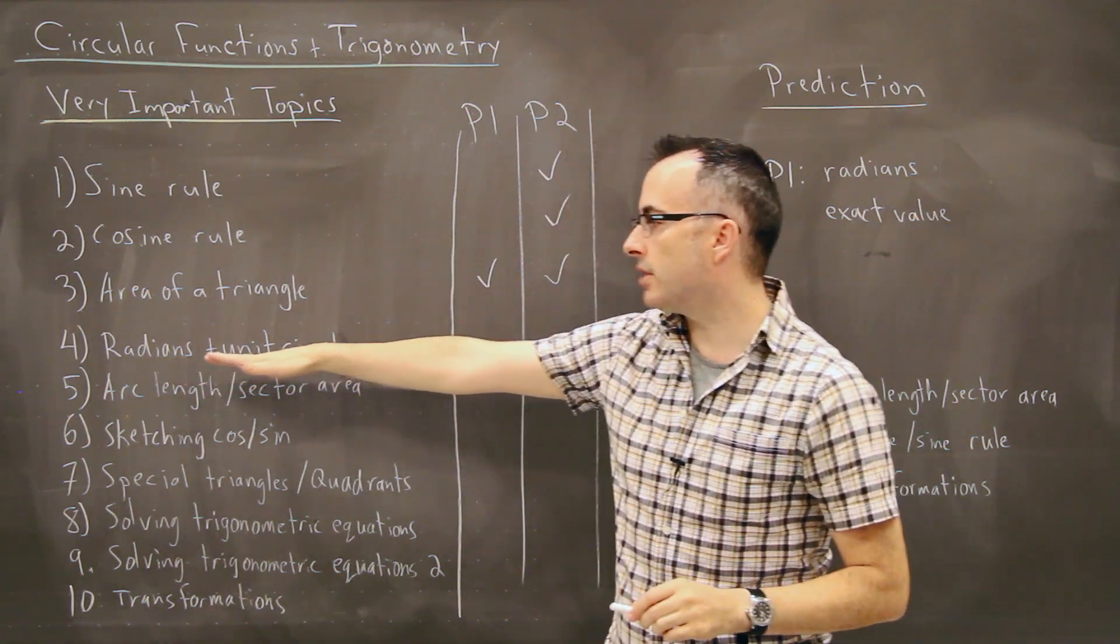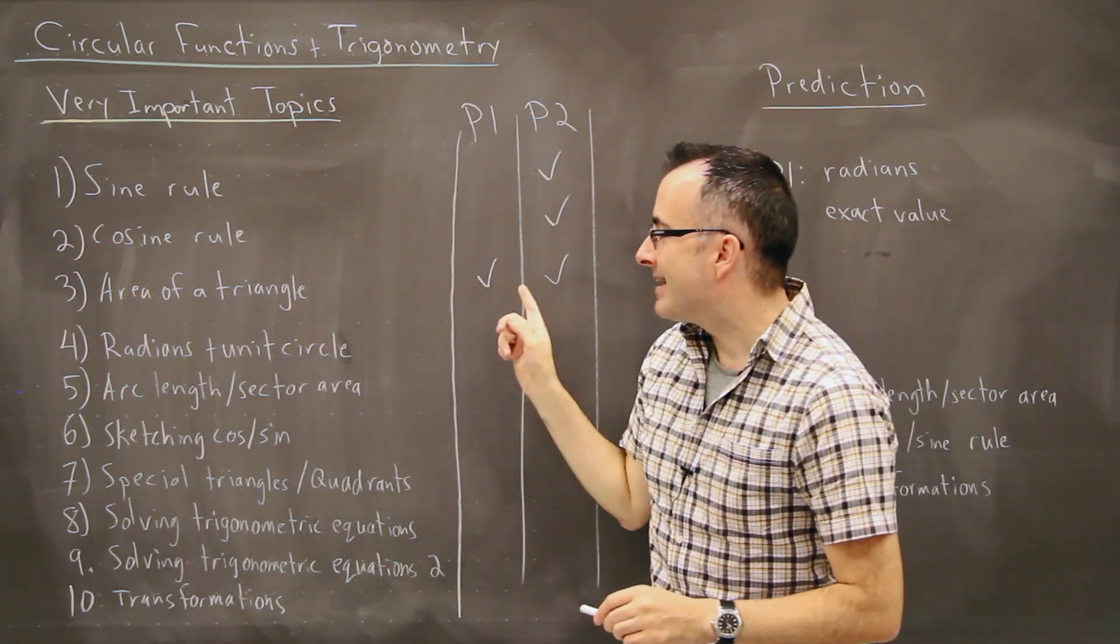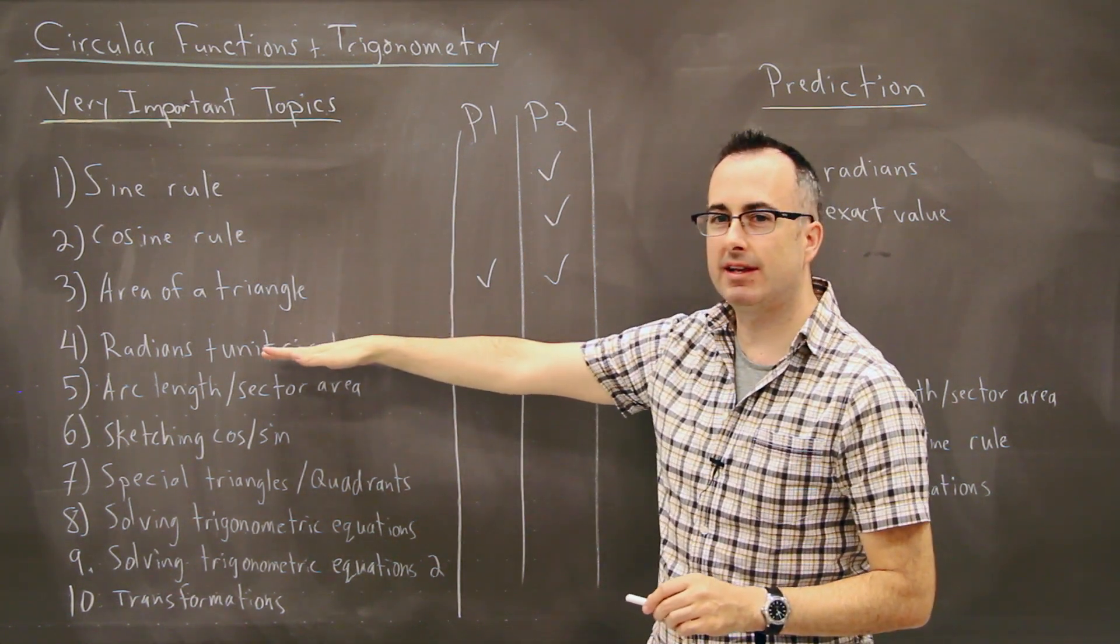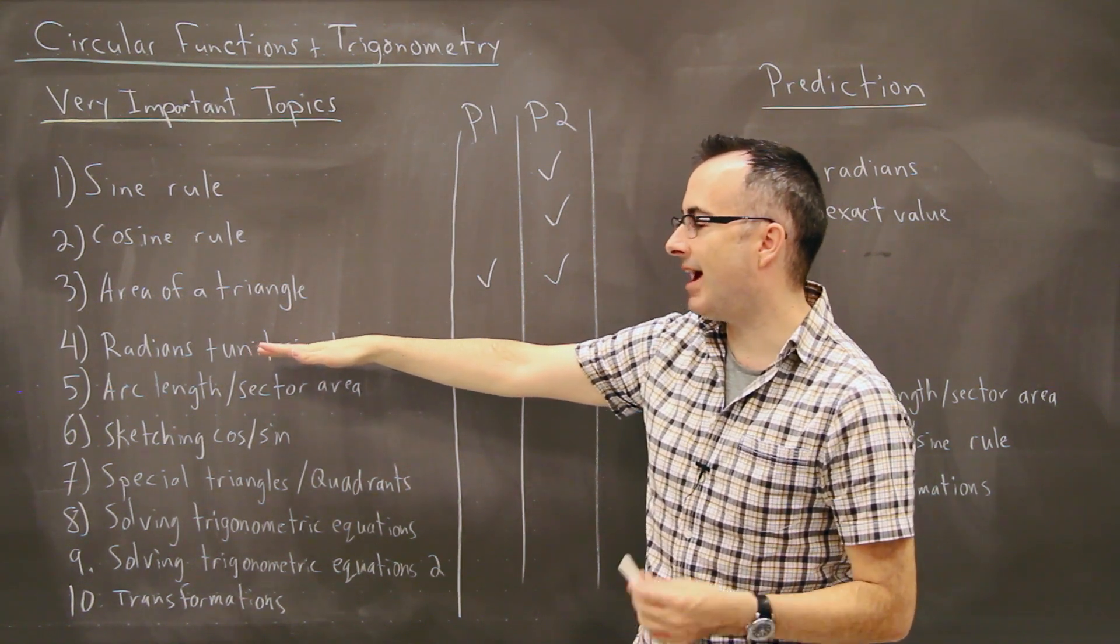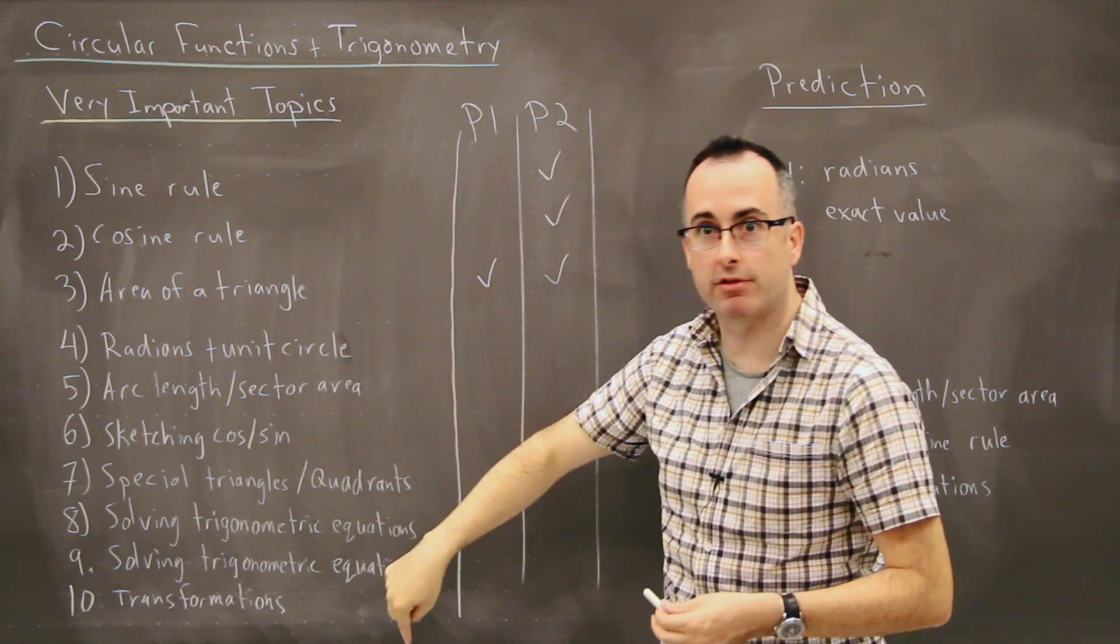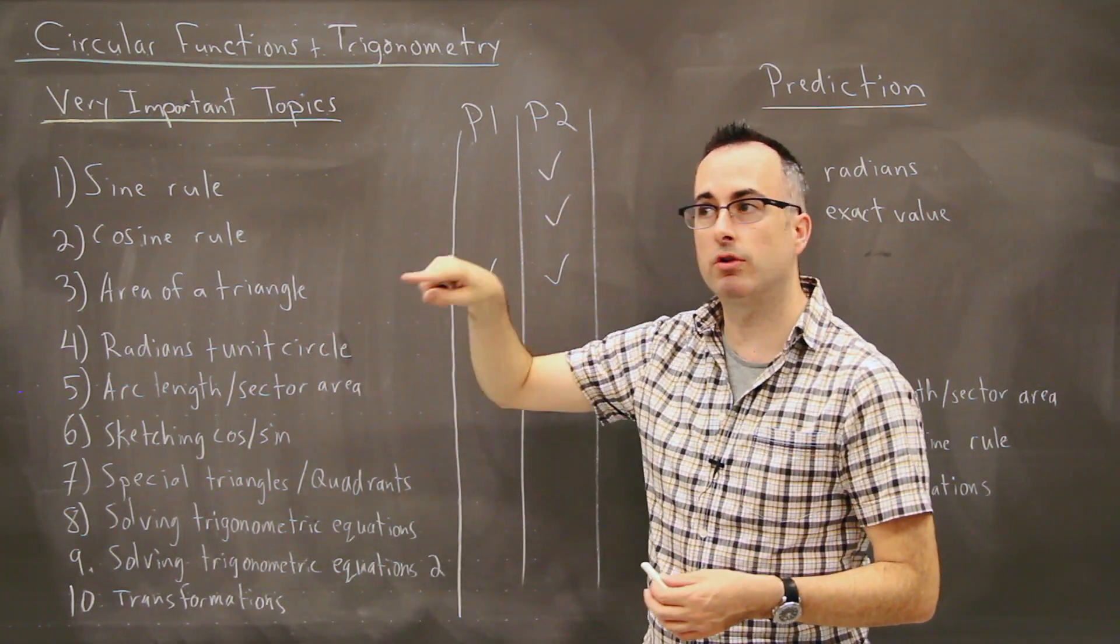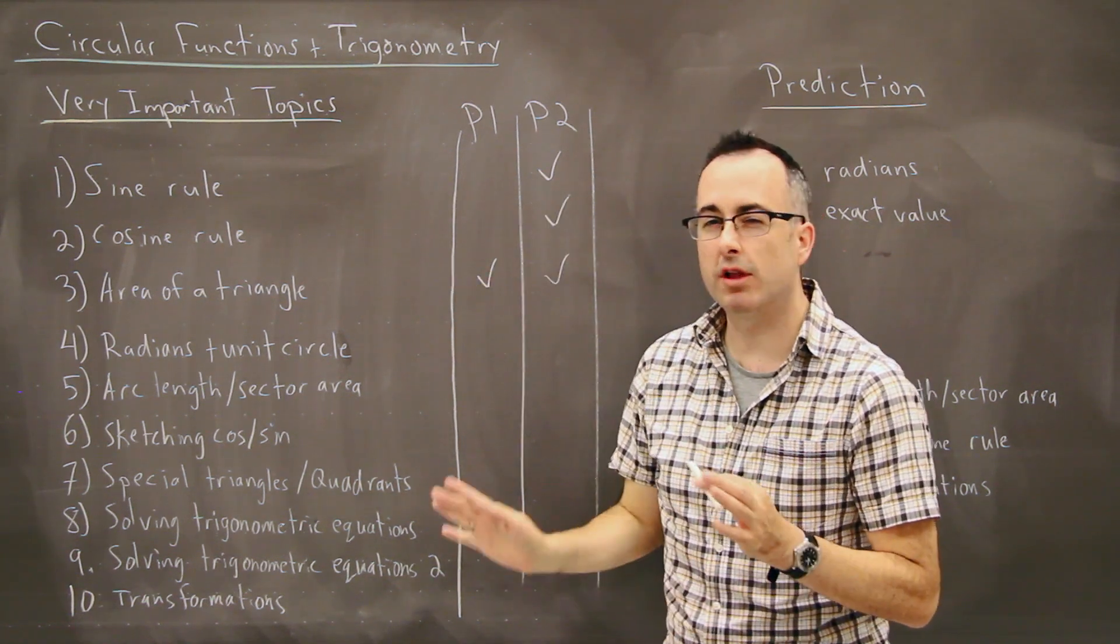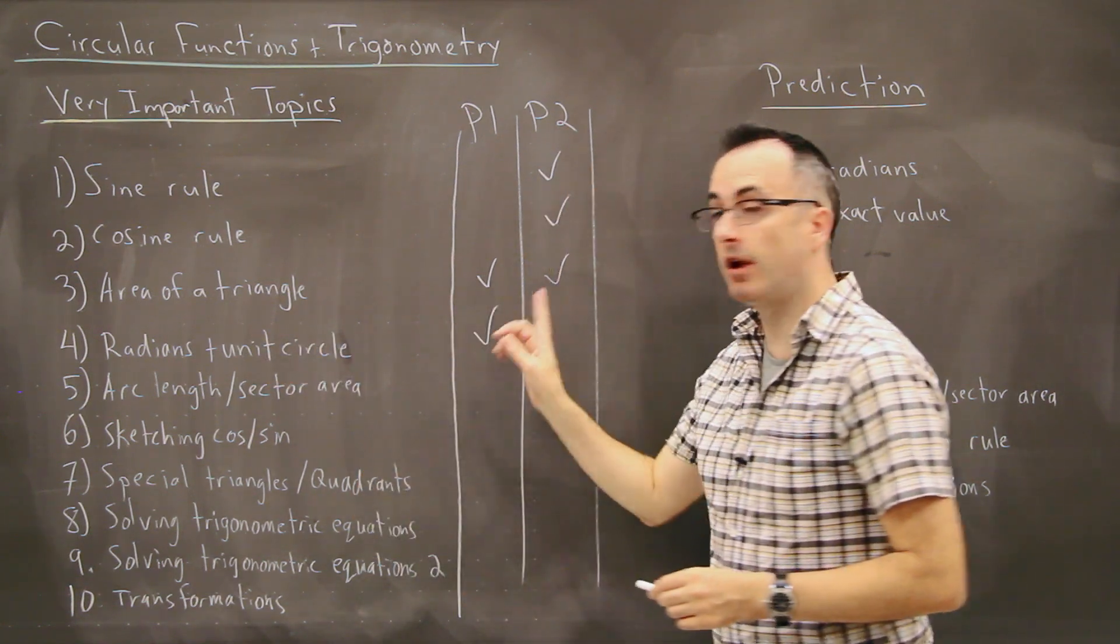Now, for topic four here, what I've called topic four, radians and the unit circle. This is kind of a general skill. This isn't really asked as one question itself. This is sort of implied in a lot of other things. But radians, this is understanding that we can go around in a circle, and instead of doing things in degrees, we do things in radians. So this is a whole other way of thinking about mathematics. If we do this one here, this shows up most often on paper one.